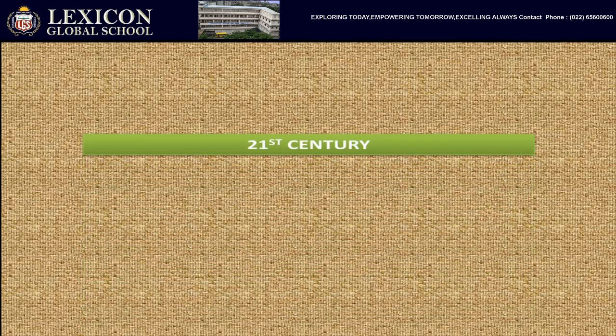In the 21st century, newspapers have continued to fulfil an important role and therefore were acknowledged as the fourth column of democracy. Look at the achievement of the newspapers.